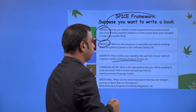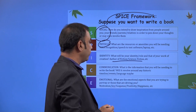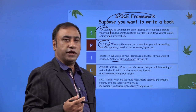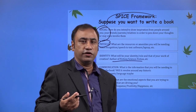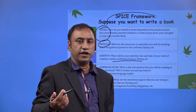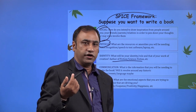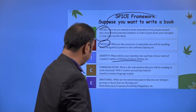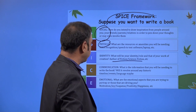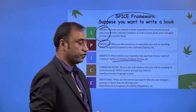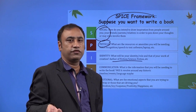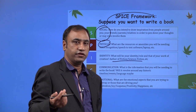Communication — what information will you need to write the book? Will it revolve around any historic timeline, event, or language? What will you communicate and what message will your book carry? This needs to be understood at the need finding stage. Emotional — what are the emotional aspects you are trying to portray or that are driving you? Motivation, joy, suspense, positivity, happiness — these are some of the emotions you might be trying to portray while writing this book.